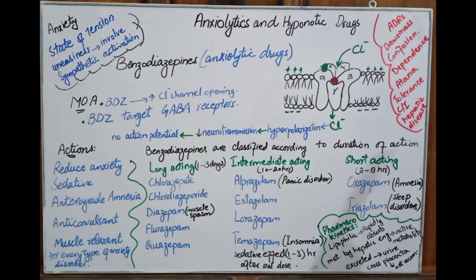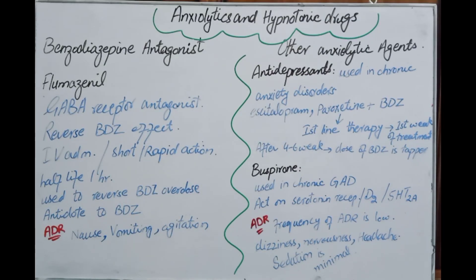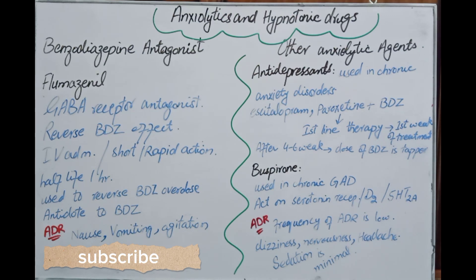Adverse drug reactions of benzodiazepines include drowsiness, confusion, physical dependence, ataxia, and tolerance development. They are contraindicated in hepatic disease. The benzodiazepine antagonist is flumazenil, which acts as a GABA receptor antagonist that reverses the benzodiazepine effect by competitive inhibition, acting as an antidote for benzodiazepine overdose.